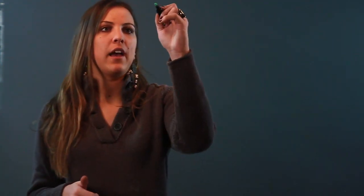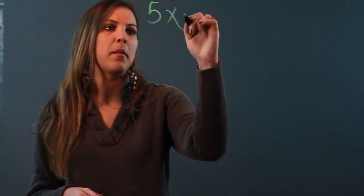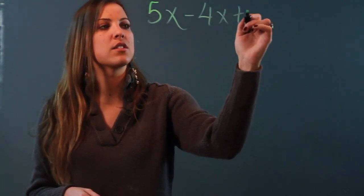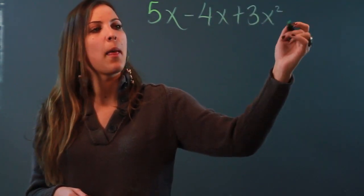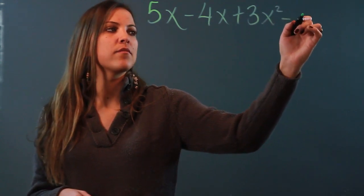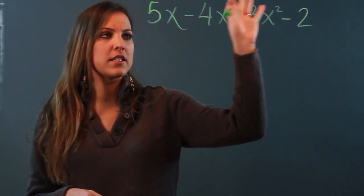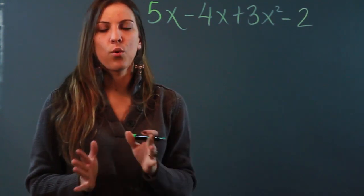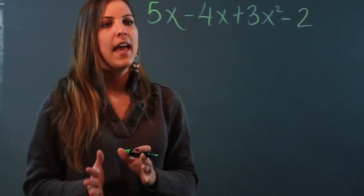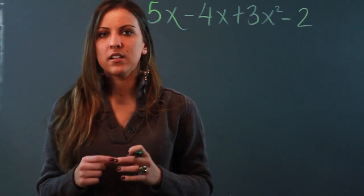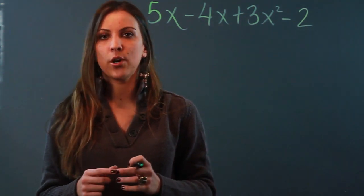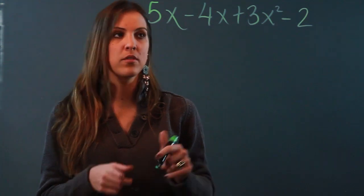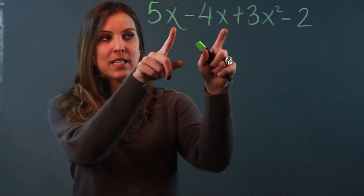If we wanted to add polynomials, let's say we had 5x - 4x + 3x² - 2. The important thing to remember when adding or subtracting polynomials is that you can only add or subtract like terms. What I mean by like terms is terms that have the same variables and the same exponents.